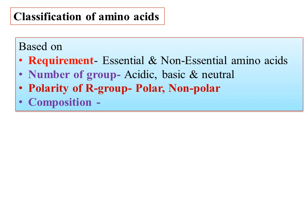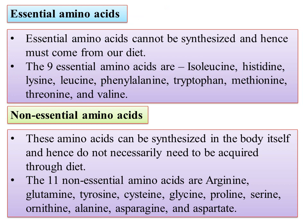Amino acids have requirements based on number of groups, polarity, and composition. In the last class, we covered 20 amino acids — alpha amino acids that are amphoteric in nature, having both acidic and basic units. Based on the requirement, 30% of our diet should contain protein. Amino acids are classified as essential and non-essential. Essential amino acids cannot be synthesized by our body through metabolic processes and must be supplemented through diet.